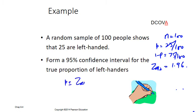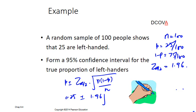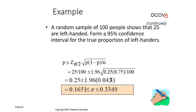We substitute into the formula: p plus or minus Z alpha by 2 times the square root of p(1 minus p) over n. That gives us 0.25 plus or minus 1.96 times the square root of (0.25 times 0.75) over 100. The calculation is done and that is our confidence interval for the population proportion.